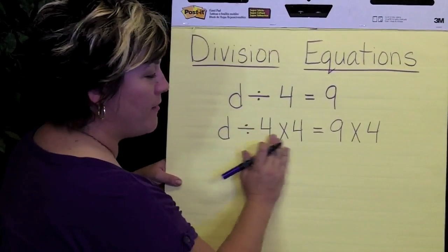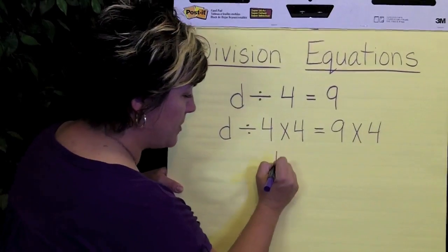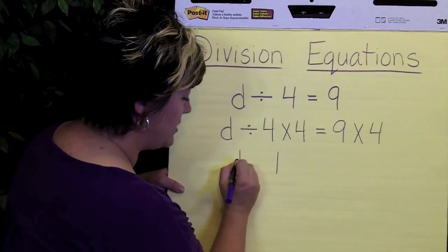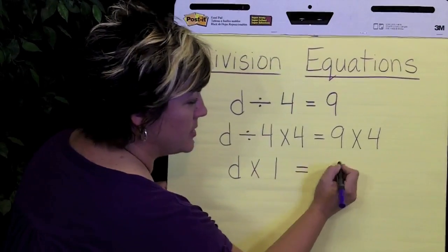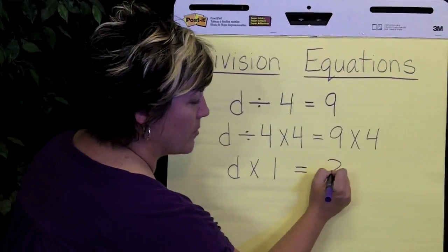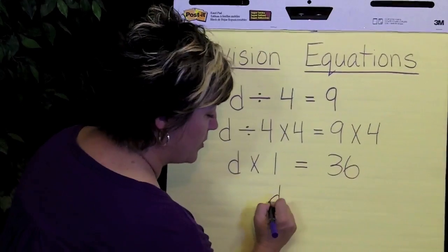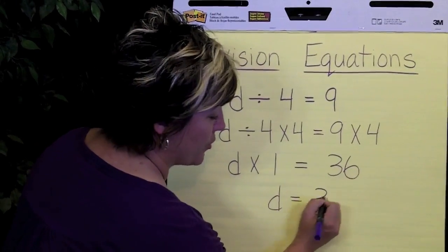And so divided by 4 times 4, they cancel each other out, and that just becomes a 1. So d times 1 equals 9 times 4 is going to be 36, and we end up with d equals 36.